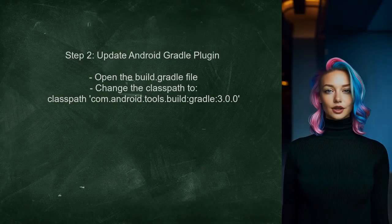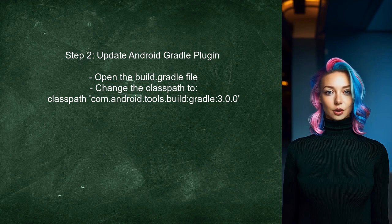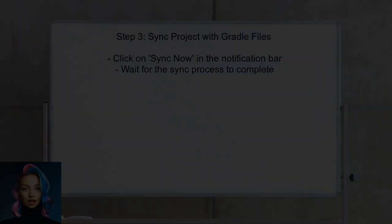Next, ensure that the Android Gradle plugin version is compatible with the updated Gradle version. You can change the plugin version in the build.gradle file. After updating the versions, sync the project with Gradle files. This step is crucial to apply the changes made in the configuration files.